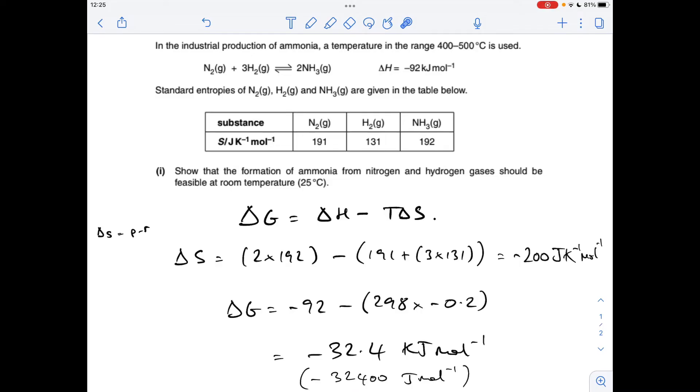So putting the numbers in, I'm getting delta G equals minus 92 minus 298 Kelvin. Remember, temperature's got to be in Kelvin for this, times minus 0.2. So I've switched the delta S from joules per Kelvin per mole into kilojoules per Kelvin per mole, so that we've got kilojoules in both of those units.